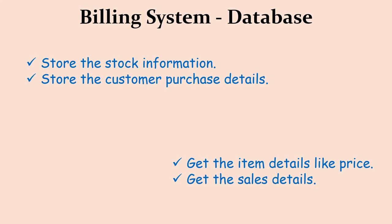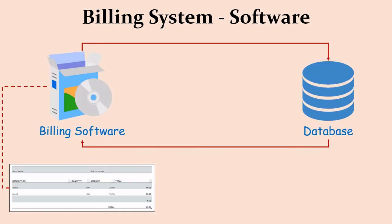Some of the data exchanged between the billing application and the database includes: stock information — when new stock arrives, it is entered by the operator and stored in the database; when a customer makes a purchase, the purchase details also get stored; when a customer purchases an item, the billing application retrieves the price from the database; and sales details for a month can also be requested from the database.